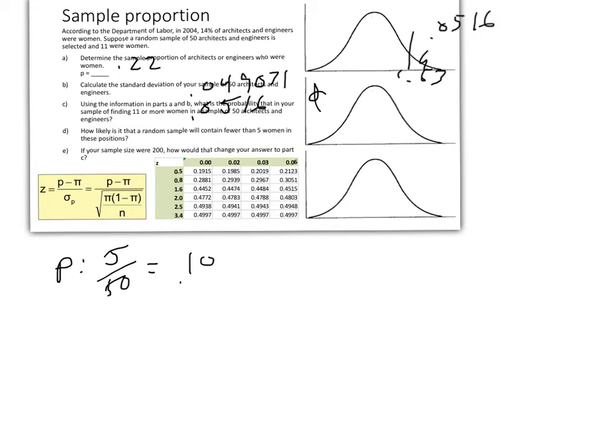Now this part of our equation is going to be Z equals 0.1 minus 0.14 over—our denominator remains the same because our sample size is still the same and our population proportion is still the same—0.049071. Our result, you'll notice, will be a negative value because 0.1 is less than 0.14. So our result is negative 0.82.